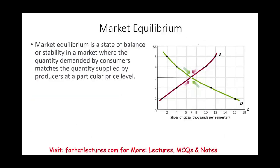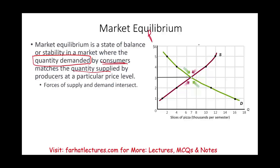So what's market equilibrium? Market equilibrium is a state of balance or stability in a market where quantity demanded — what's demanded by consumers — matches the quantity supplied by the producers, by the sellers. So the forces of supply and demand intersect. Let me show you on this graph what that means. We are selling pizzas, so someone is buying and someone is selling. This is the price and this is the quantity. The supply line is here and the demand curve is here, and they intersect right at this point.